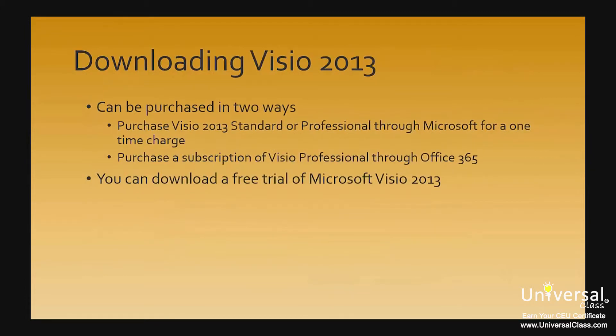Visio can be purchased in one of two ways. You can purchase Visio 2013 in standard or professional version through Microsoft for a one-time charge. However, if you do not want to pay a large sum of money at once, you can also purchase a subscription of Visio Pro through Office 365, which is Microsoft's subscription-based service for Office programs.